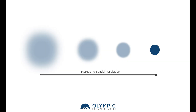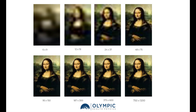Here we show a nondescript object and how it may appear with poor or limited spatial resolution, all the way up to very defined edges where we can really pick that object out and see all of the borders and the fine detail within the object.